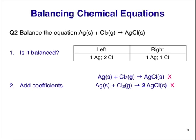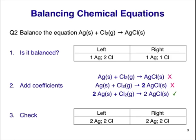This gives us two Cl atoms on the left and right. But wait — this equation is still not balanced, because we now have two Ag atoms on the right and only one on the left. I don't want to change the coefficient I just wrote, because then I'll be going a step backwards. Instead, I'll put a coefficient of 2 in front of the Ag on the left. We now have two Ag and two Cl on the left, and two Ag and two Cl on the right. This equation is now balanced.